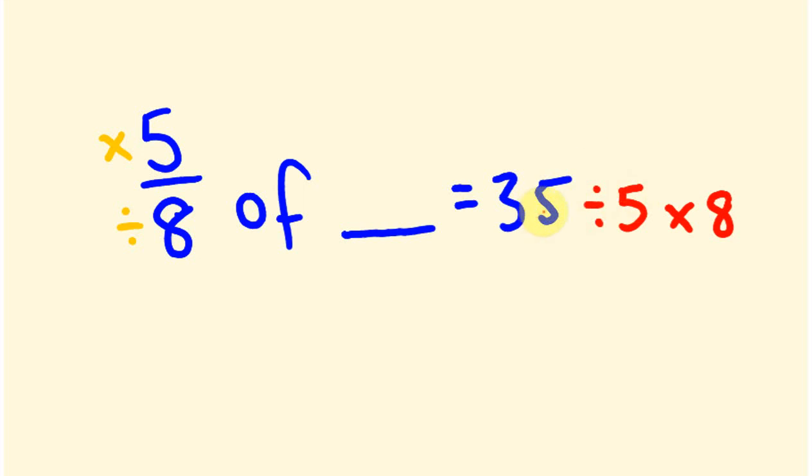35 divided by 5, which is 7, times 8 is 56. And funnily enough, you could do this in the opposite or you could go 35 times 8 and then divide your answer by 5 and you'd get the same answer. I just think it's often a lot easier to deal with smaller numbers, so we're dividing in that sort of deal.